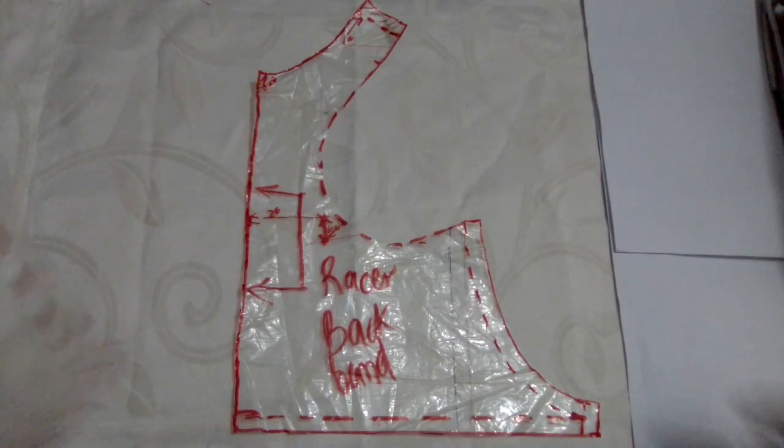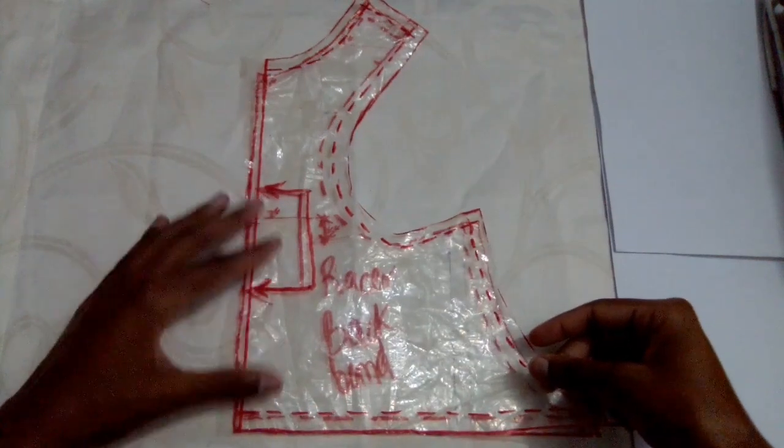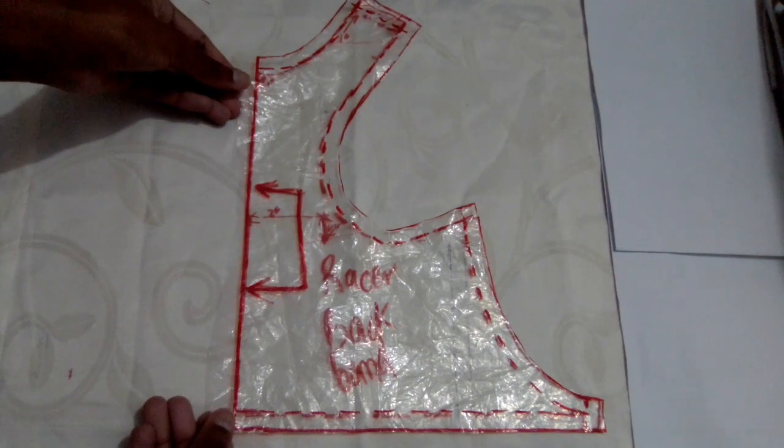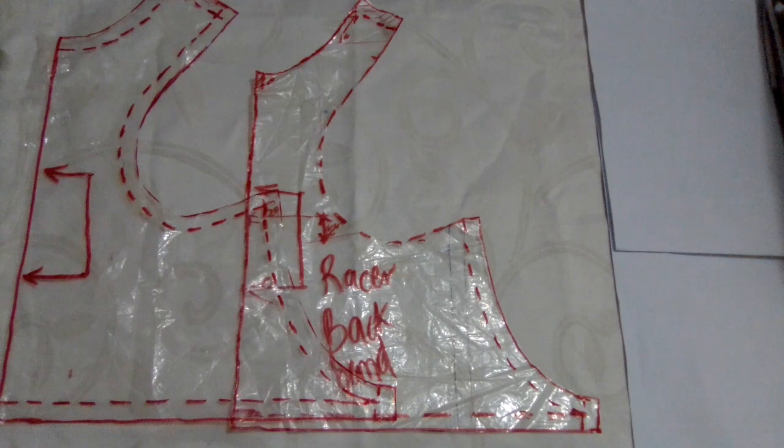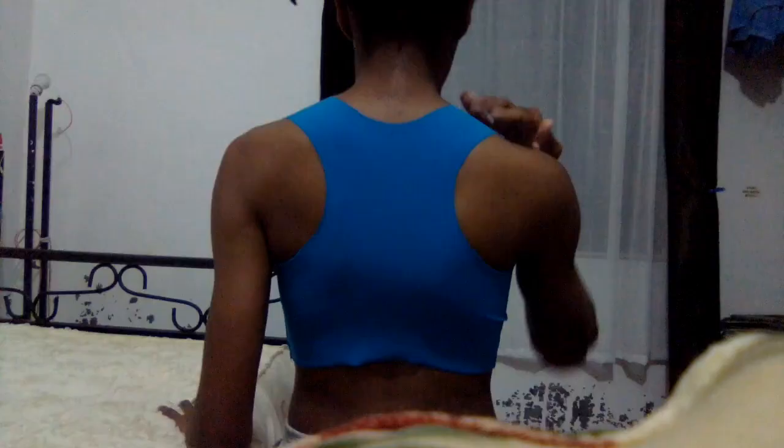If you want to use regular elastic, you can add seam allowance at the neckline and at the shoulder, and the seam allowance will depend on the width of your elastic. So maybe add one centimeter for one centimeter elastic. Make sure you sew a test sports bra to test out your new racer back pattern and adjust it accordingly.